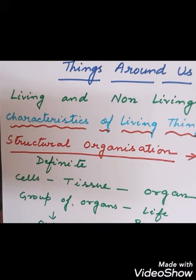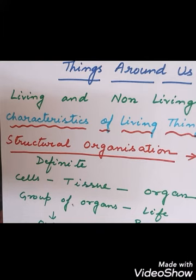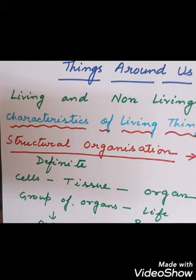Suppose someone has gone to a park and you are asked to find out what are the living and non-living things there. The living things you will see are people, trees, plants, flowers, and grasses. For non-living things, you can see benches, and playing equipment like slides, seesaws, or swings. Different items which don't have any life are called non-living things.